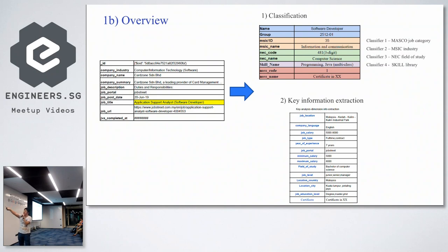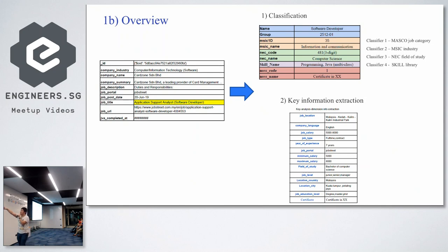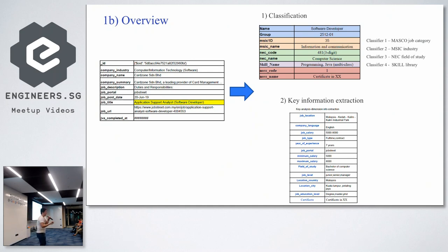The classification had four different classifiers based on our requirements: a standard government job category library called MASCO, an industry category called MSIC, a field of study category called NEC, and a skill library. The results would map a software developer to their corresponding ID. Beyond classification, we also did information extraction to capture keywords — job location mentioned in the post, job level required, and field of study needed.